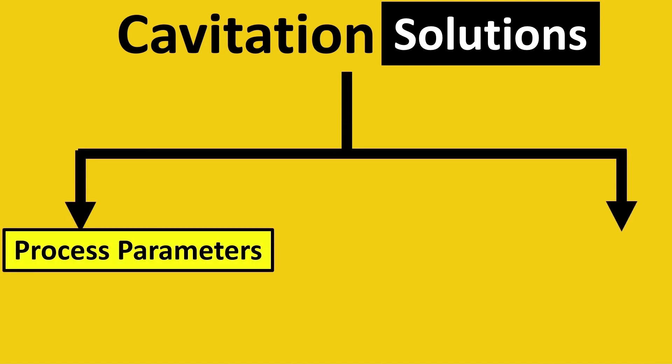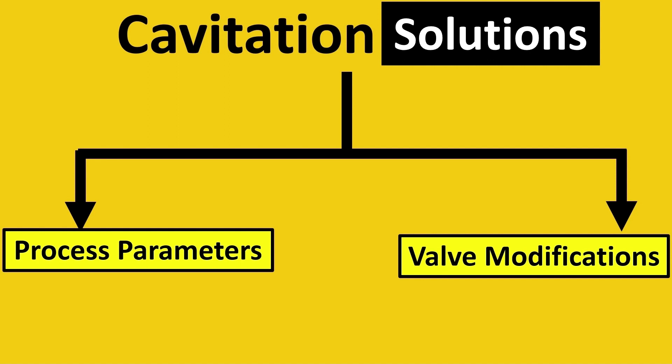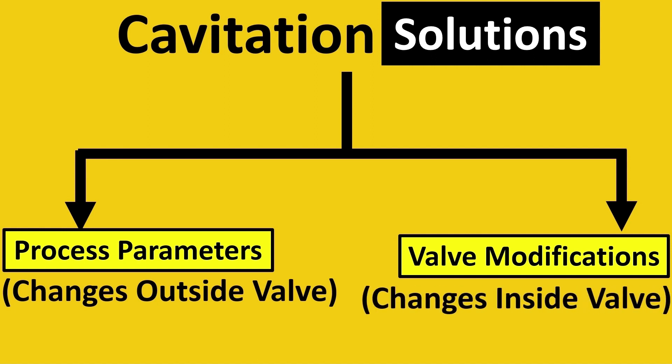One solution is to change the process parameters, or you try to do valve modifications. Process parameters means changing the variables outside of the valve, maybe the pressure drop, temperature, etc. Valve modification is something you do inside the valve.